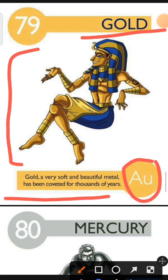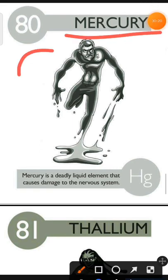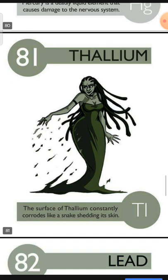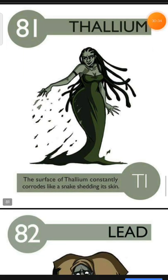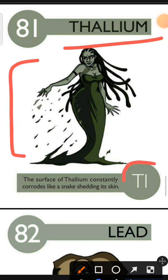Element number 80 is Mercury. The characteristic of Mercury is: Mercury is a deadly liquid element that causes damage to the nervous system. Element number 81 is Thallium. The characteristic of Thallium is: the surface of Thallium constantly corrodes like a snake shedding its skin.